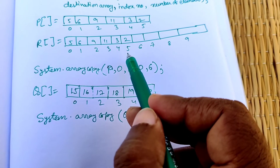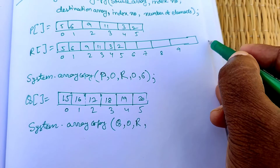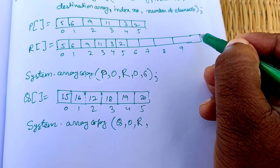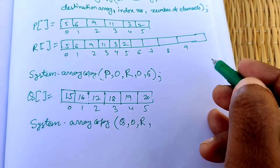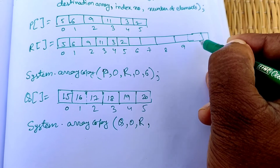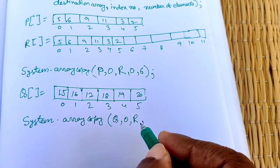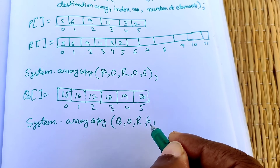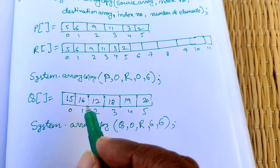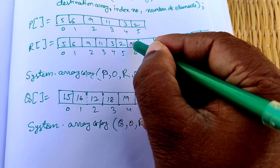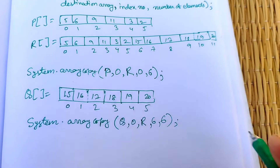Since we have already copied up to index 5 in r, the destination starting index for q is 6. We copy 6 elements, so the call stores 15, 16, 17, 18, 19, 20 into r[6] through r[11], completing the merge.